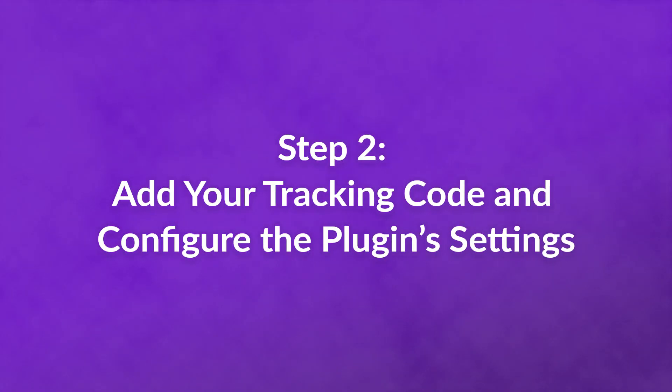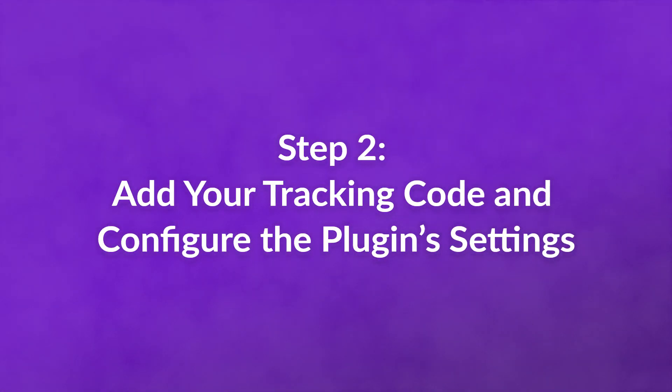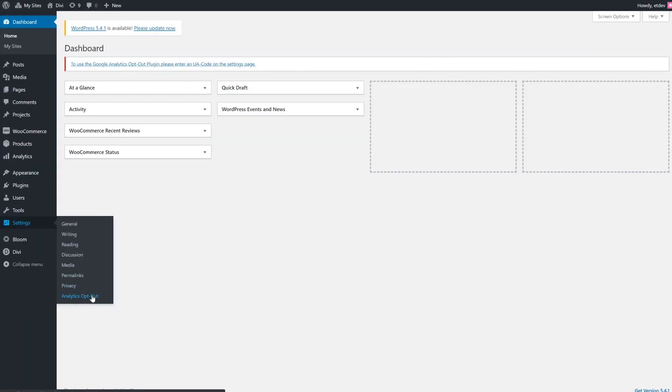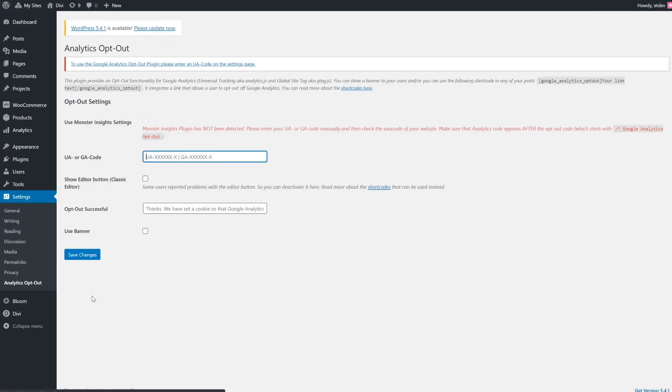If they ever want to opt back in, however, they'll need to clear their cookies. Configuring the plugin is fairly simple. Once you install and activate it, go to Settings > Analytics Opt-Out in your admin sidebar.